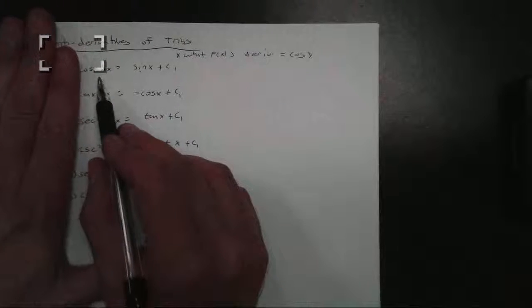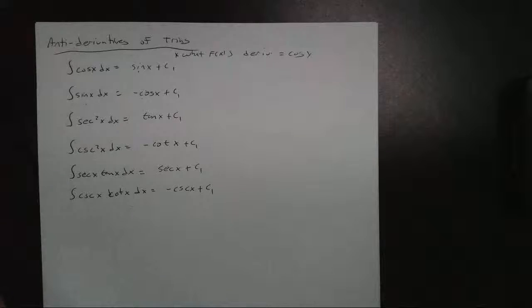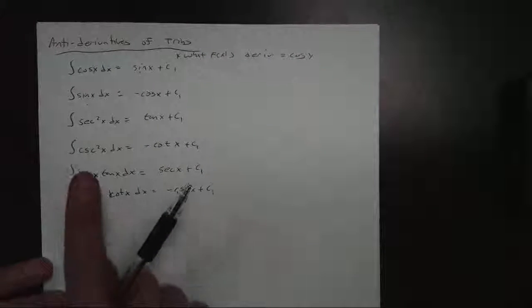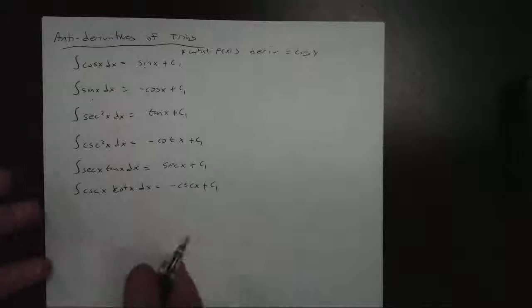The derivative of sine, cosine. The derivative of negative cosine, positive sine. They're just inverses. The other thing is, we don't know the antiderivative of secant and cosecant right now. We'll talk about that later on. But for right now, these are pretty easy.